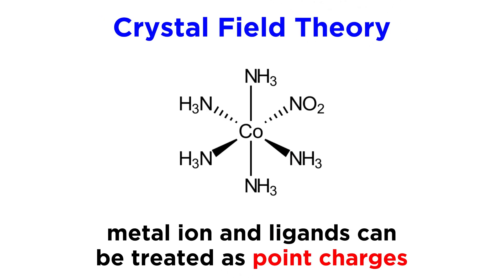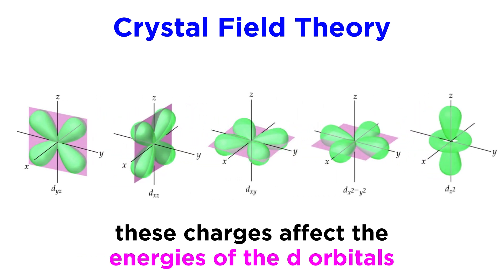Crystal field theory is based on the premise that the metal ion and the ligands can be treated as point charges, and the spatial arrangement of these point charges will affect the energies of the d orbitals for the central metal atom.